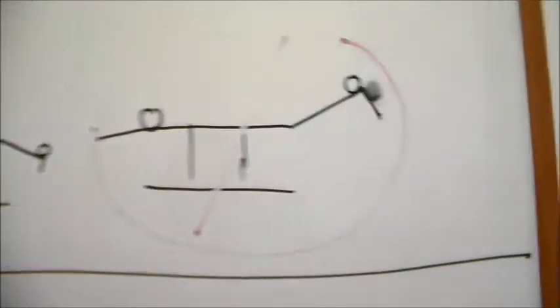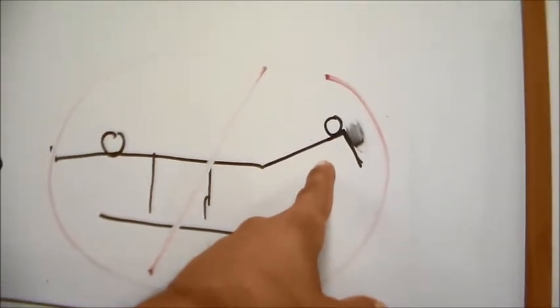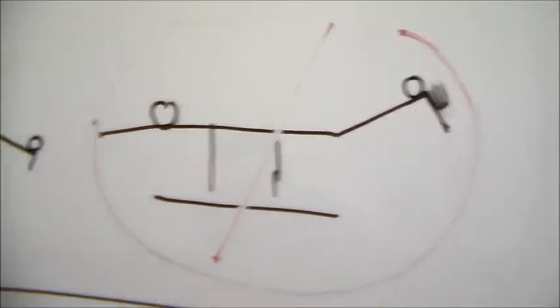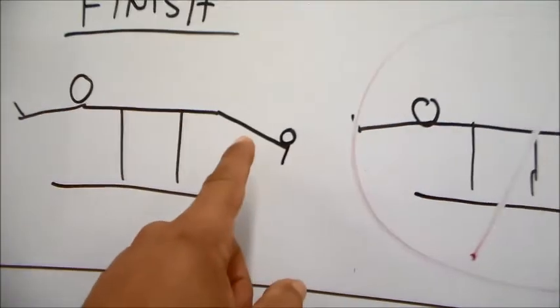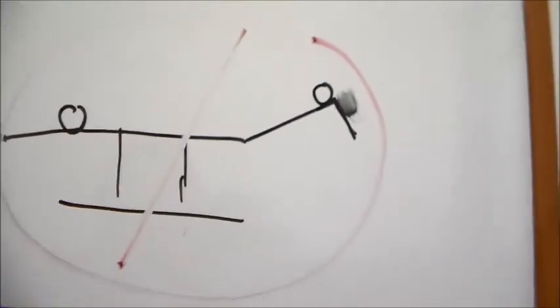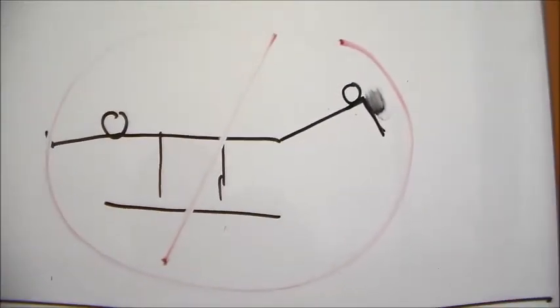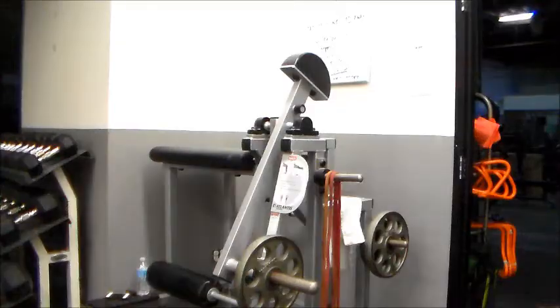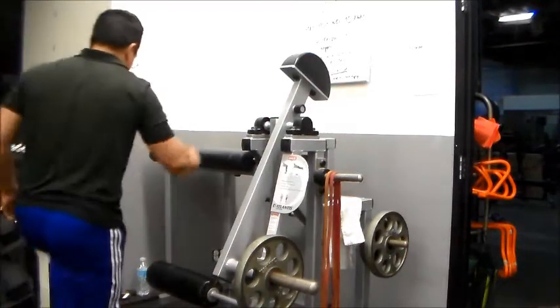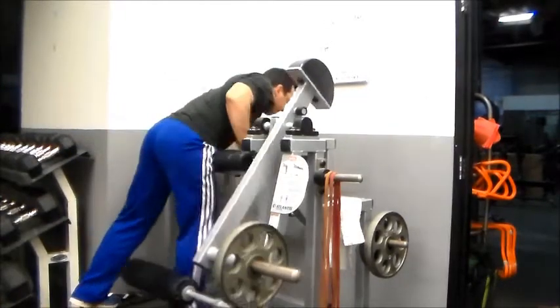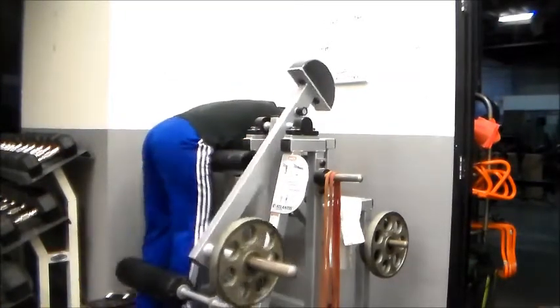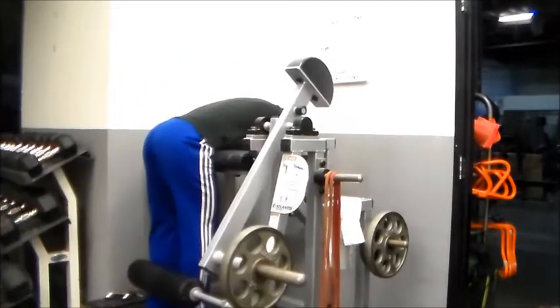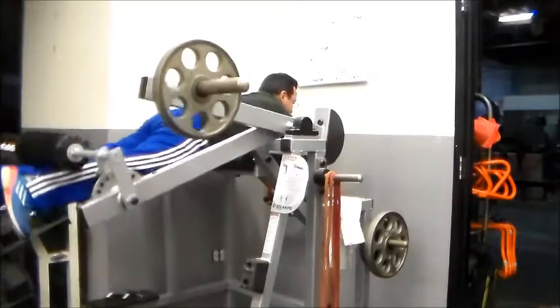What we don't want to see is a hyperextension of the hips here. This is not a swinging contest. All you need is to start there, finish at this position. Again, no excessive hyperextensions, not necessary. This is the reverse hyper.